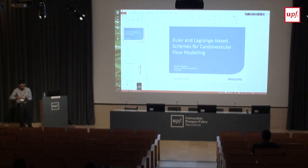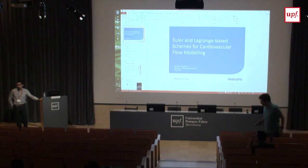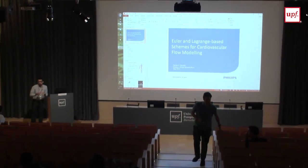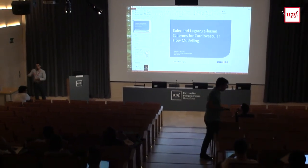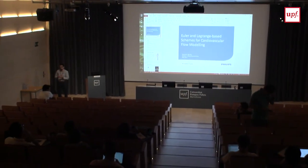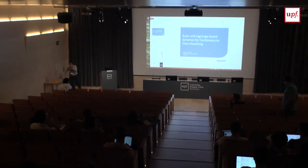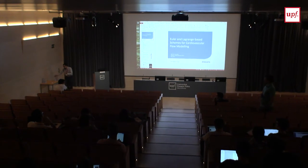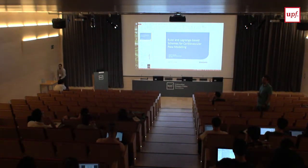Thank you for this nice overview of different methods for different applications. It's really important to choose the right method for the right question. One of the big problems you mention is large computational time. Do you think it's related to the way we do it, and when we speed up and go to faster methods, do you lose something in accuracy or flexibility? What are the trade-offs — is it that we haven't been using the right methods, or that we have to choose what's important and what we can sacrifice?